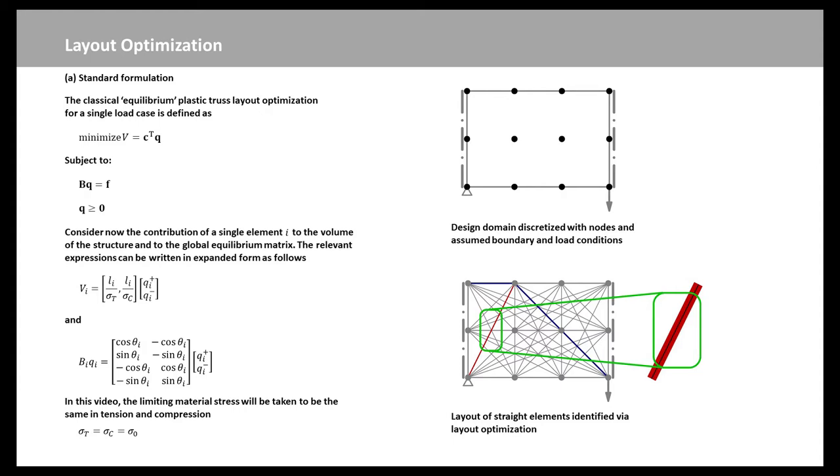We can see the right-hand side example. The design domain is discretized with nodes and assumed boundary and load conditions. Then layout of straight elements is identified via layout optimization.